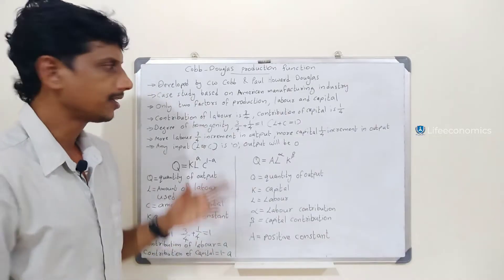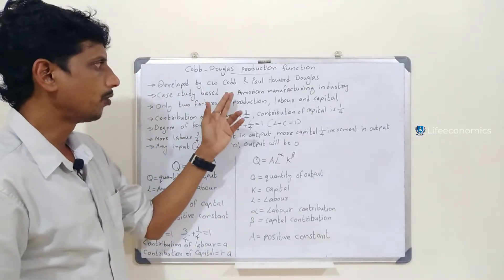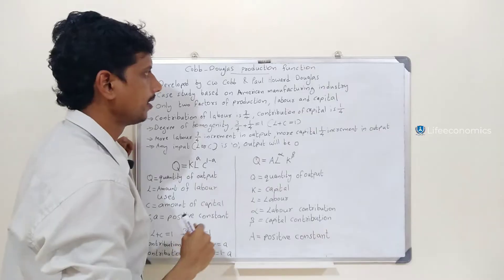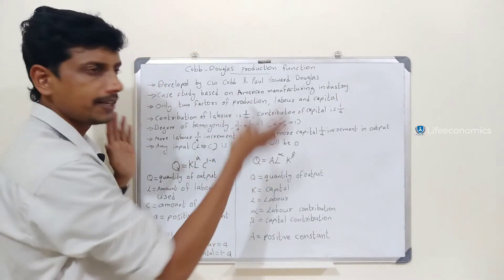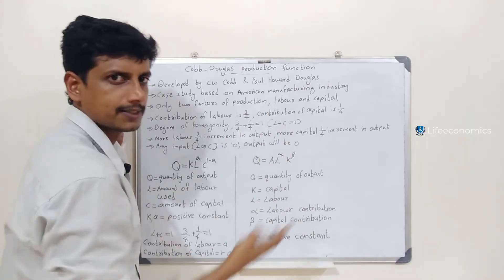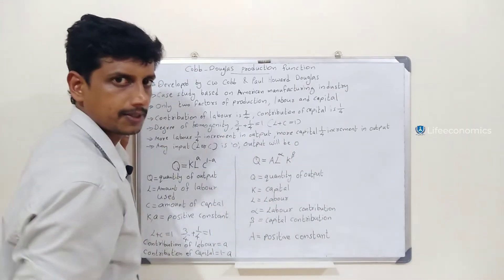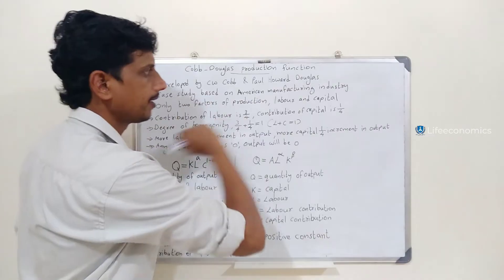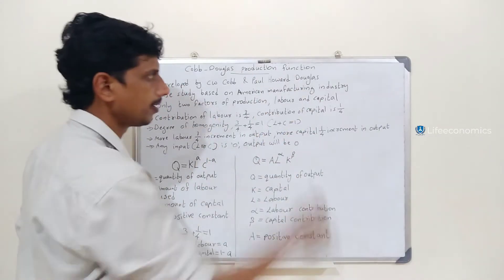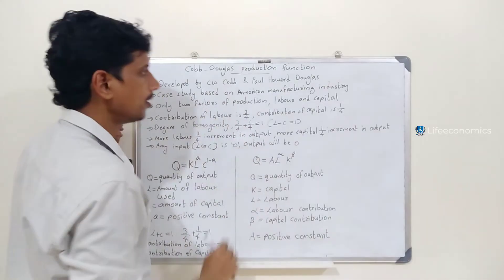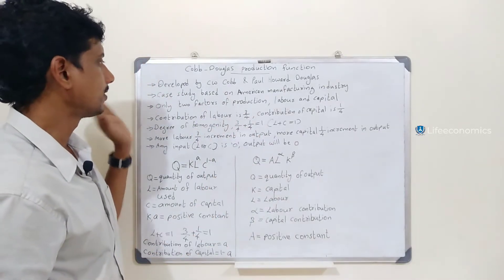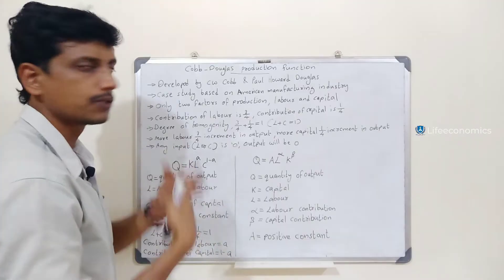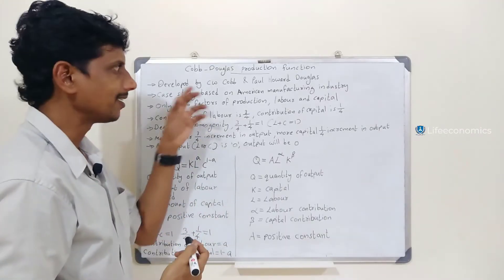The Cobb-Douglas production function was developed by C.W. Cobb and Paul Howard Douglas — he is called Cobb-Douglas. He developed this theory. Cobb-Douglas is a mathematician and Paul Howard Douglas is a politician and economist. This is a case study based on the American manufacturing industry.